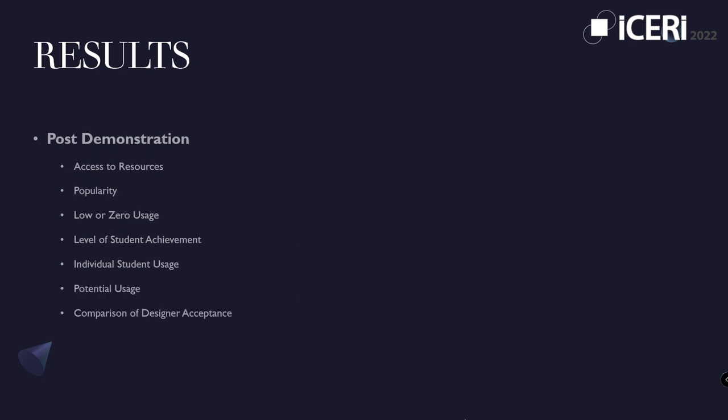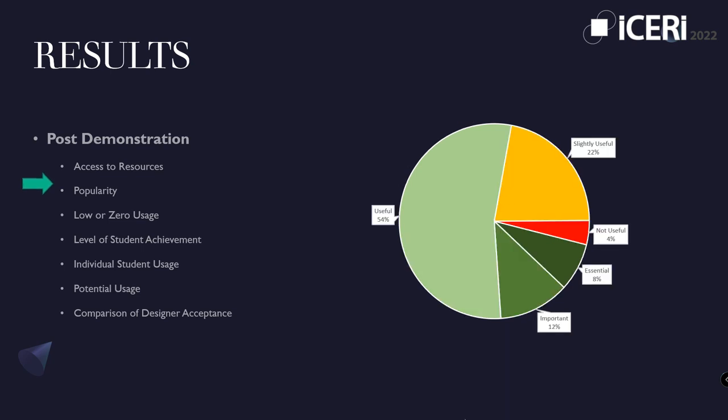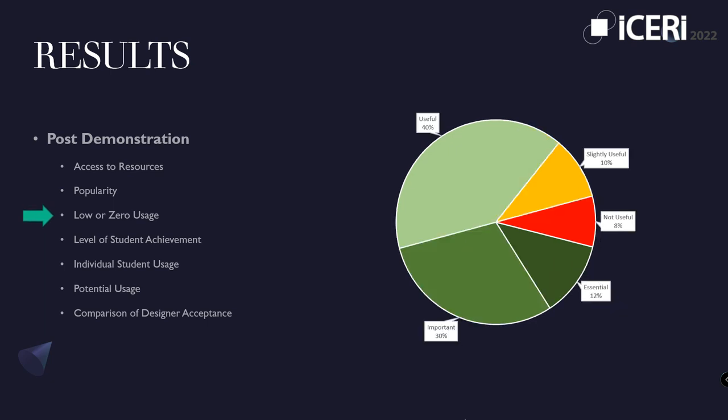The participants were surveyed to identify which parts of the software would aid them in evaluating resources and if it would be used in the future. 88% of respondents responded positively to the usefulness of knowing the total number of students that accessed a resource, giving confidence in the tool's general usefulness. The popularity of a resource was identified as another useful metric with 74% of participants responding positively, showing that data when provided to designers has a very low rejection rate.